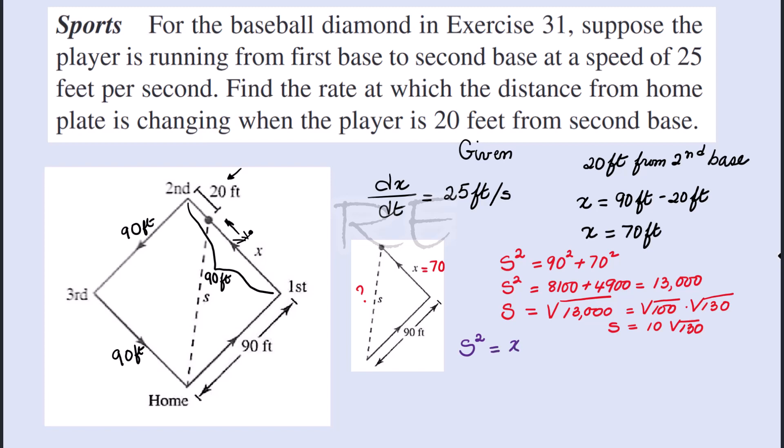as variables the quantities that are changing, which are s and x. s represents the distance from the player to home plate, and x the distance covered. We're going to take the derivative of the formula with respect to time.